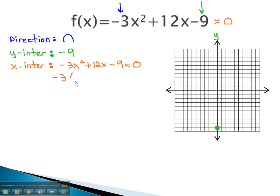First, we factor out the greatest common factor of negative 3, to get x squared minus 4x plus 3 equals 0. Continuing to factor, we get negative 3 times x minus 3, x minus 1 equals 0.